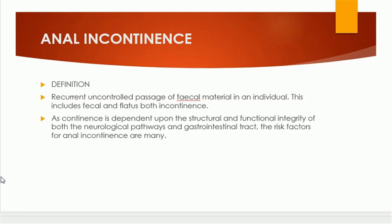Continence is dependent upon the structural and functional integrity of two things: the neurological pathways supplying the sphincter, and the gastrointestinal tract — meaning the anal canal and lower part of the rectum.